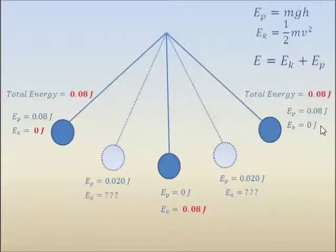The total energy should be the same at any point. Therefore, at the lowest point the kinetic energy equals to 0.08 joules, as potential energy is zero.